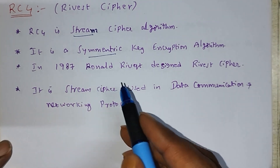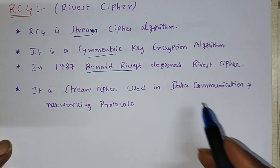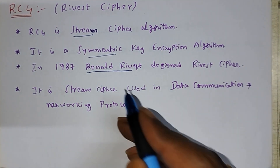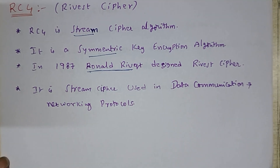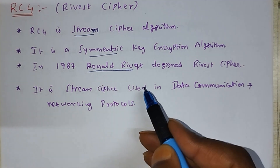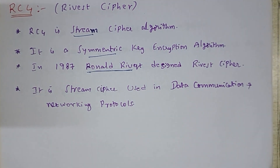In 1987, Ronald Rivest — he is the scientist — designed the Rivest Cipher. RC4 is a stream cipher used for data communication and network protocols. Mainly, it is used for data communication while transferring data over the network, and in those cases we use the RC4 algorithm.